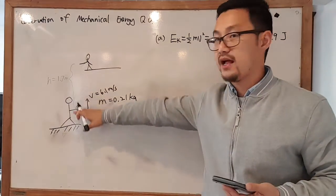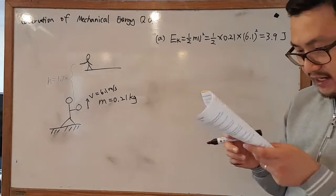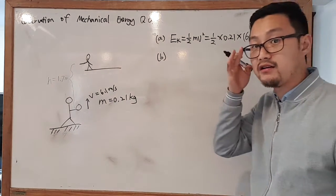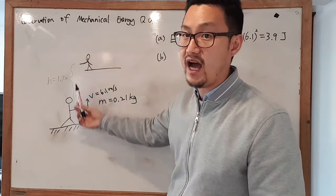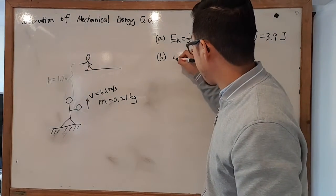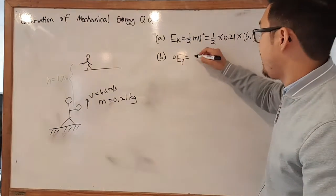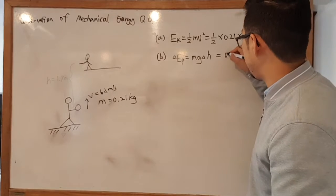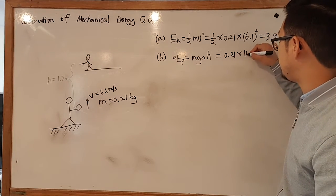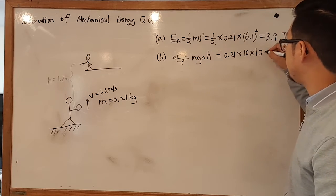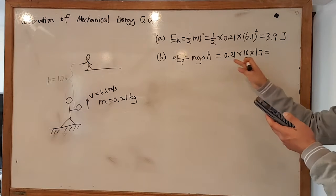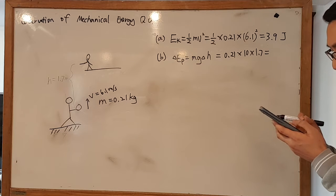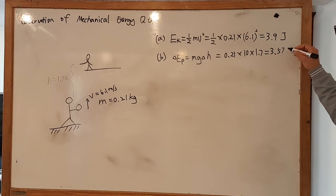Next question, part B says calculate the gravitational potential energy gained as it rises up. It's gaining gravitational potential energy because it's getting higher. The equation is mg delta h. Mass 0.21, gravity constant 10, height is 1.7. We've got all the numbers, so this should just be straightforward because there's only one equation we need to solve. That gives 3.57 joules.